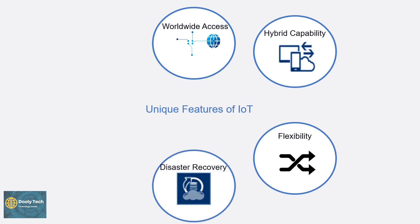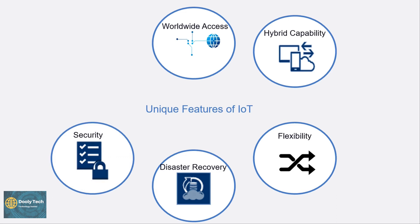The next key feature is disaster recovery. Disaster recovery is not possible without sensing devices. The sensing devices used in IoT technologies detect and measure any change in the environment and report on their status. IoT technology brings passive networks to active networks — without sensors, you could not hold an effective or true IoT environment. Next is security: IoT security protects internet-enabled devices that connect to each other on wireless networks and strives to protect IoT devices and networks against cybercrime.